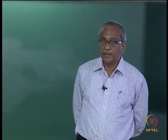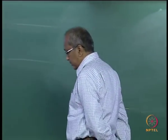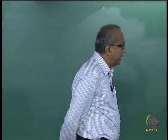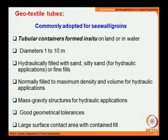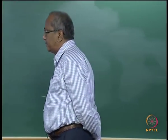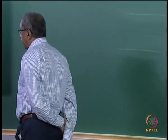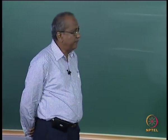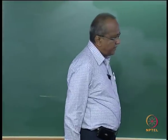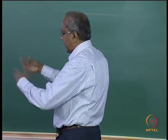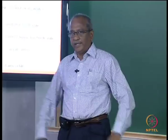The most widely adopted product is the geotextile tube, or geotube. These are tubular containers formed in situ on land or in water — both are possible. The diameters can vary from 1 to 10 meters, though 1 to 3 meters are more common. They are hydraulically filled with sand or silty sand for hydraulic applications.